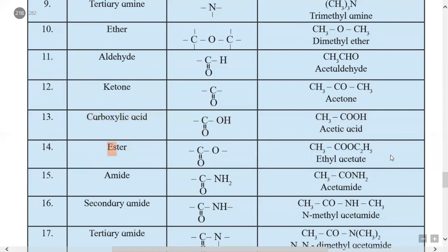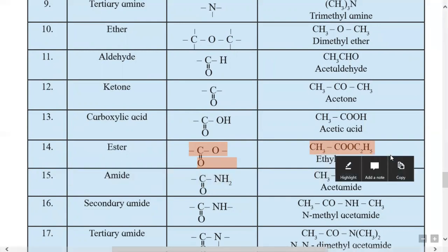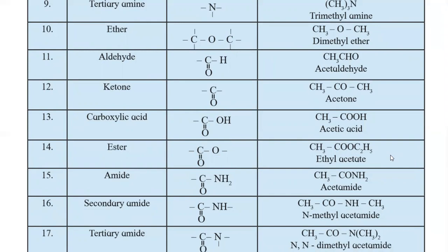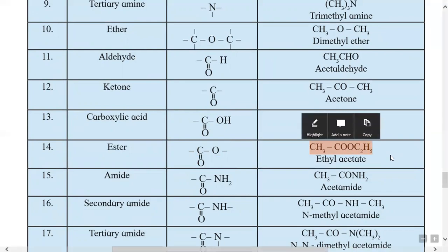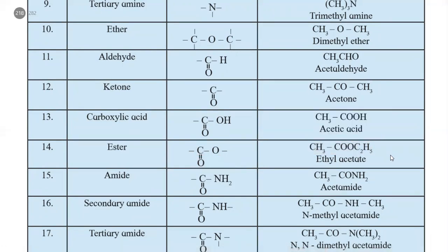The fourteenth type is ester, containing -COO- as the functional group. Example: CH3COOC2H5 is ethyl acetate, where CH3 is the first group and C2H5 is the second group. If both alkyl groups are methyl, it is methyl acetate. By adding CH2 groups to the alkyl group, we get the homologous series.